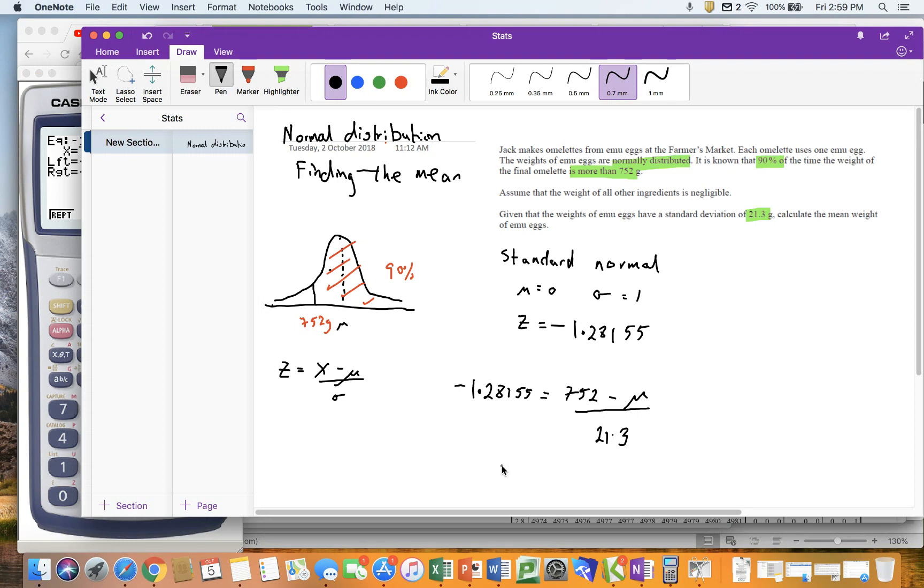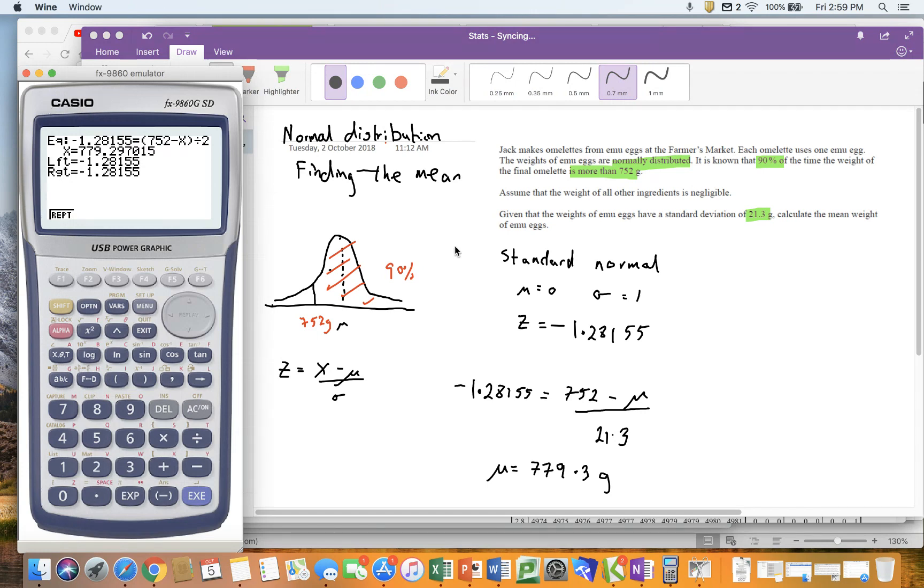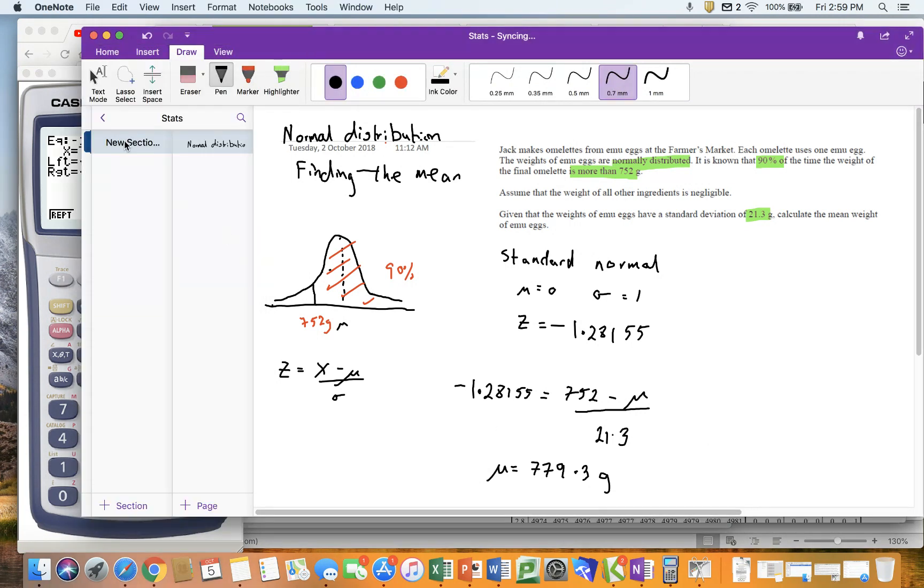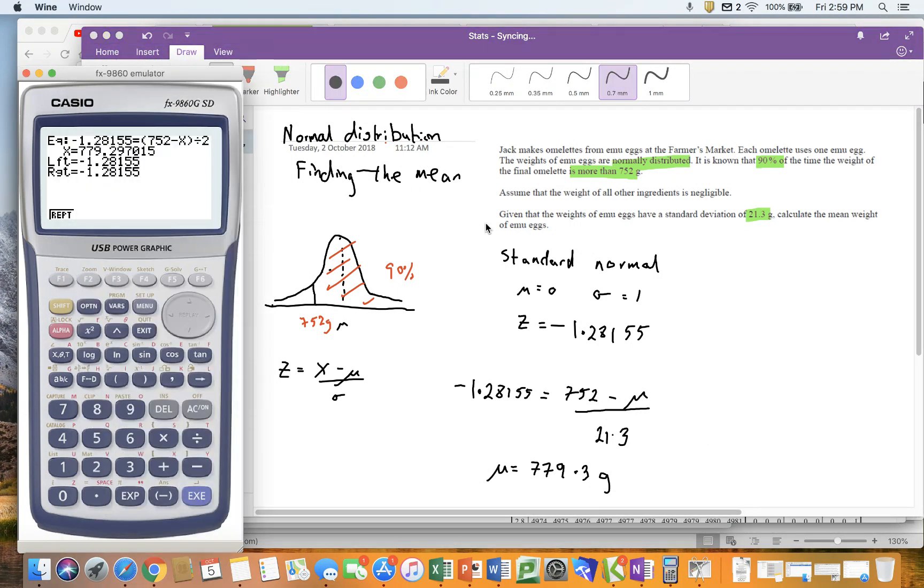So that is mu is 779.3, and I better include the units, and the units will be grams. Okay? And that's how you can do it. Now, of course, I could have done my solving, and I would have got exactly the same answer. But solver, it seems like a more convenient way of going. Okay, so the next video will be about doing exactly the same process and following the exact same steps to work out the standard deviation. So until next time.